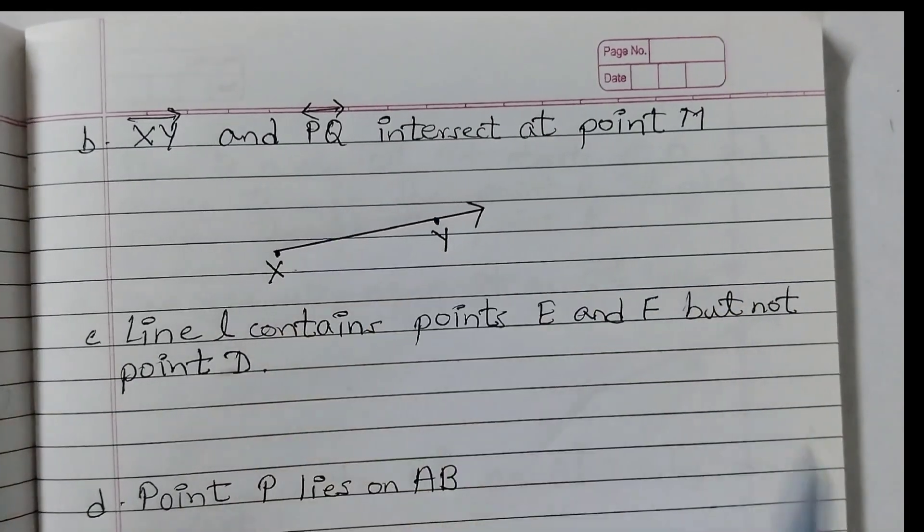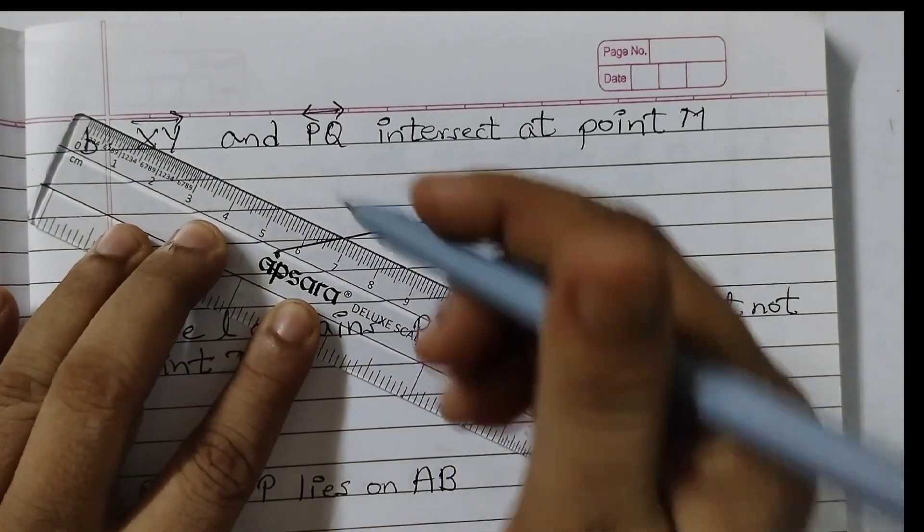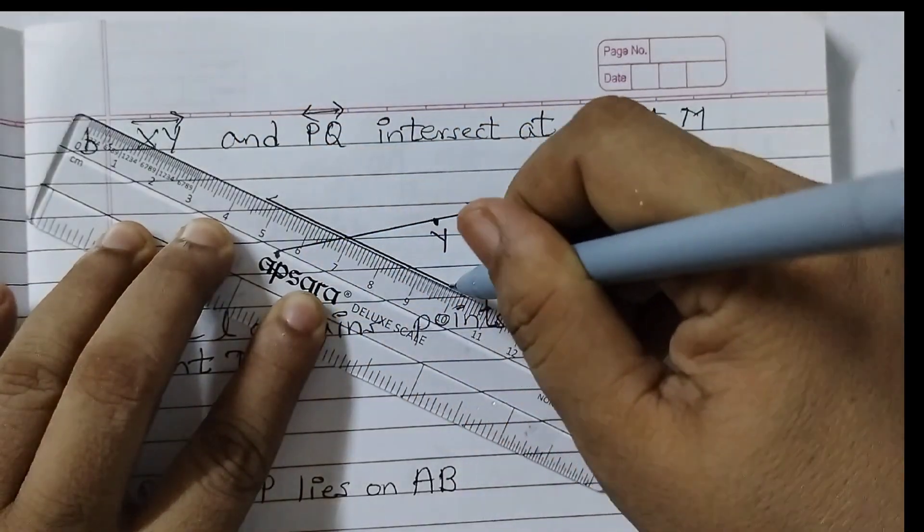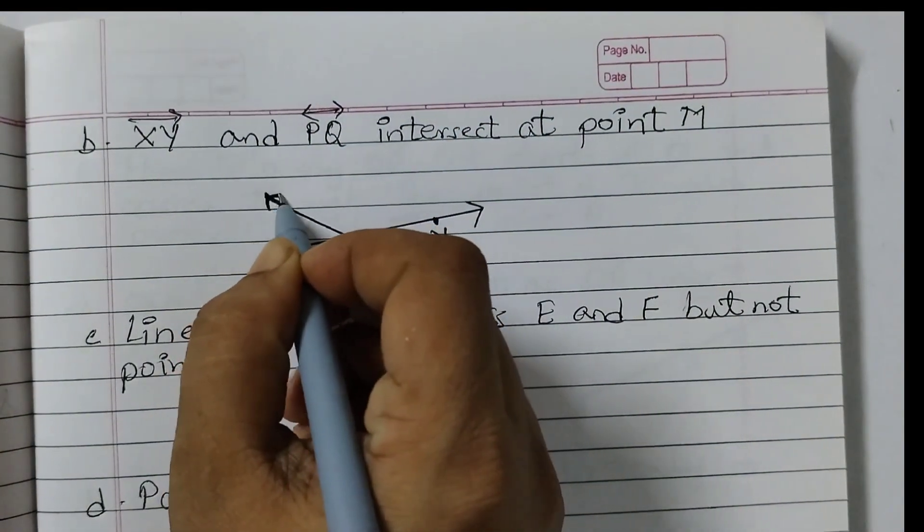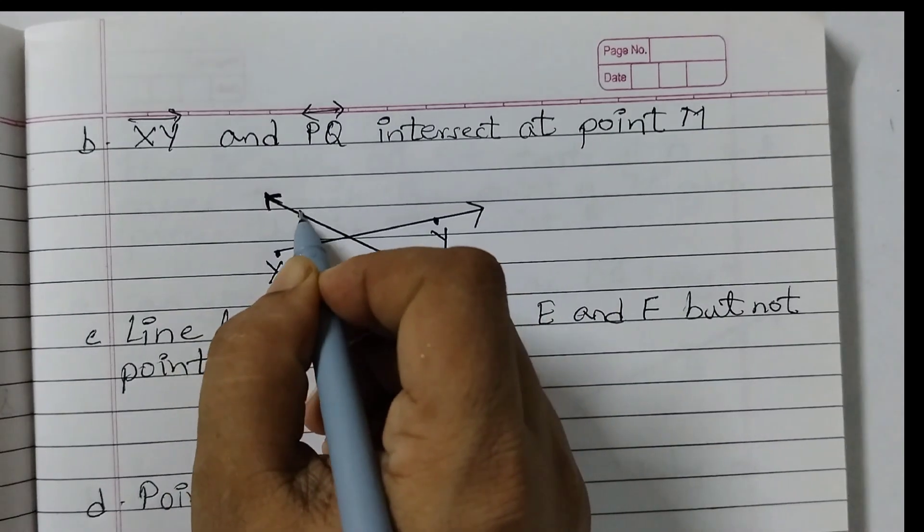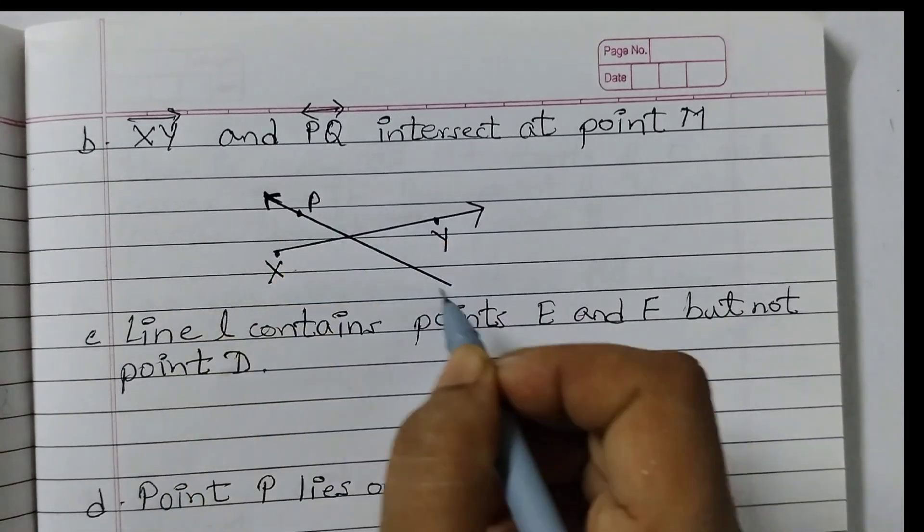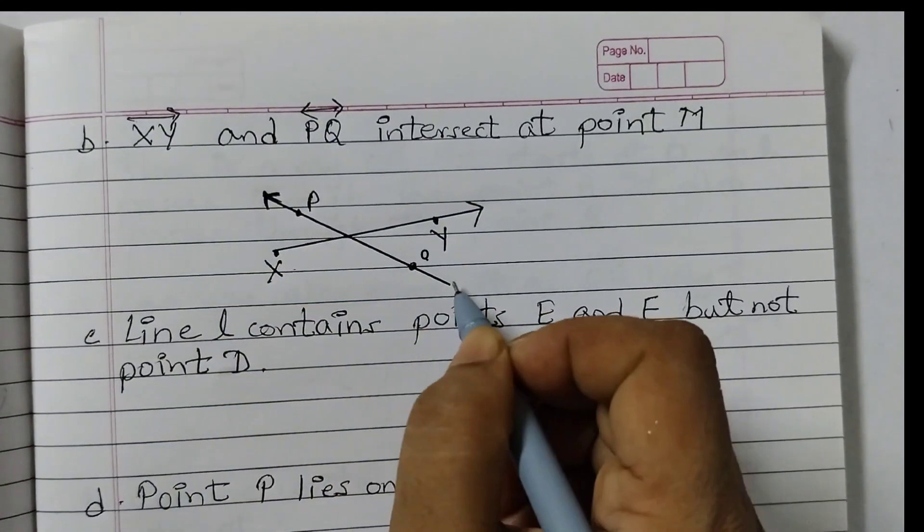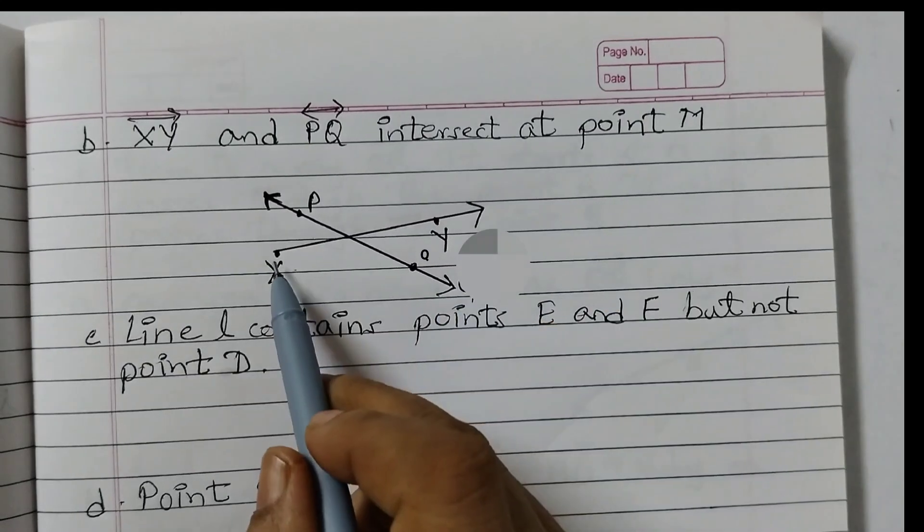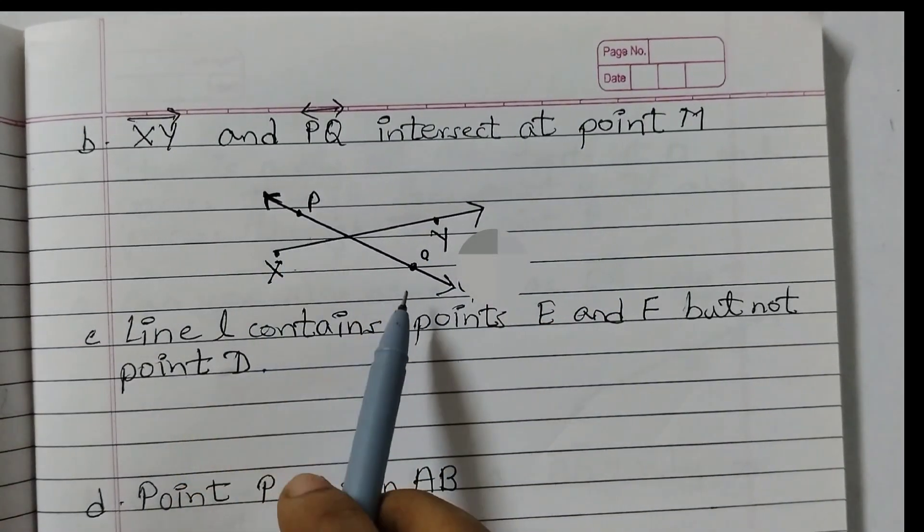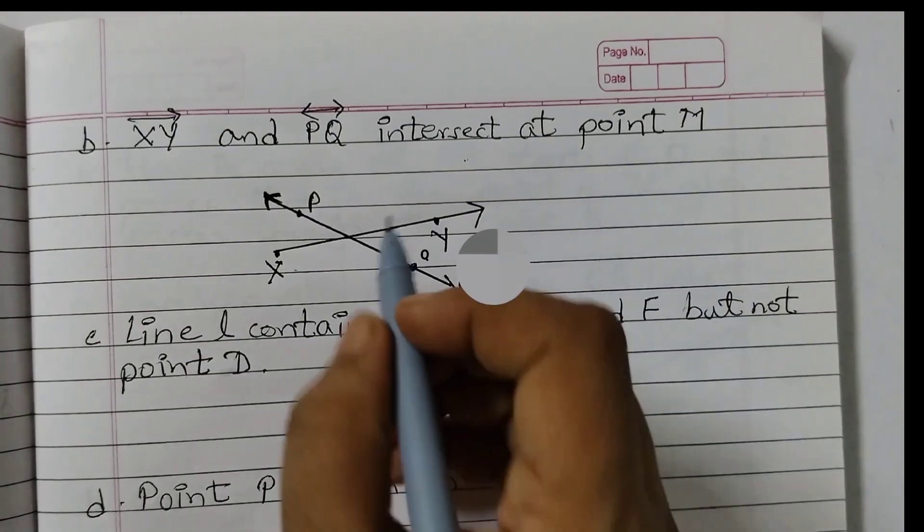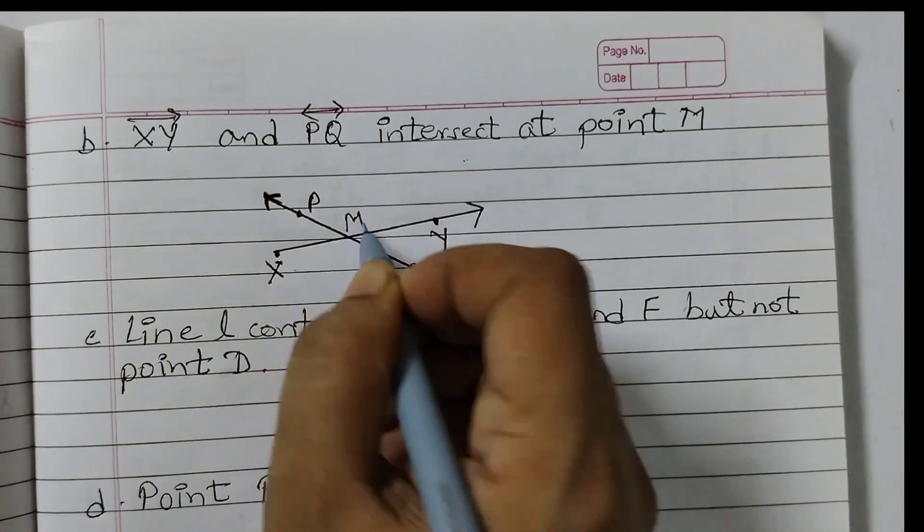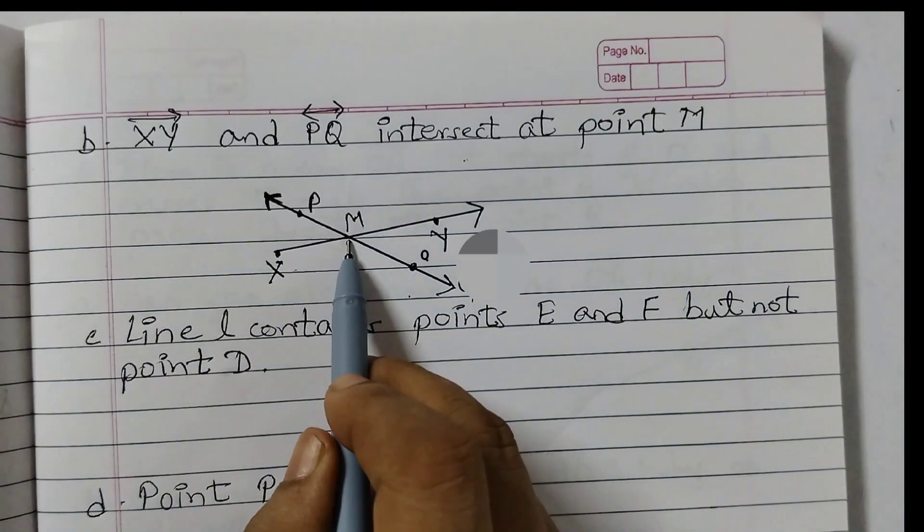Ray XY and PQ. Draw any line PQ. Let's say this is P. This is a line. So we will put an arrow head and mark it as P. Any point here on the line. This is Ray XY and this is line PQ. Intersect at point M. So this is the point of intersection, this point here.